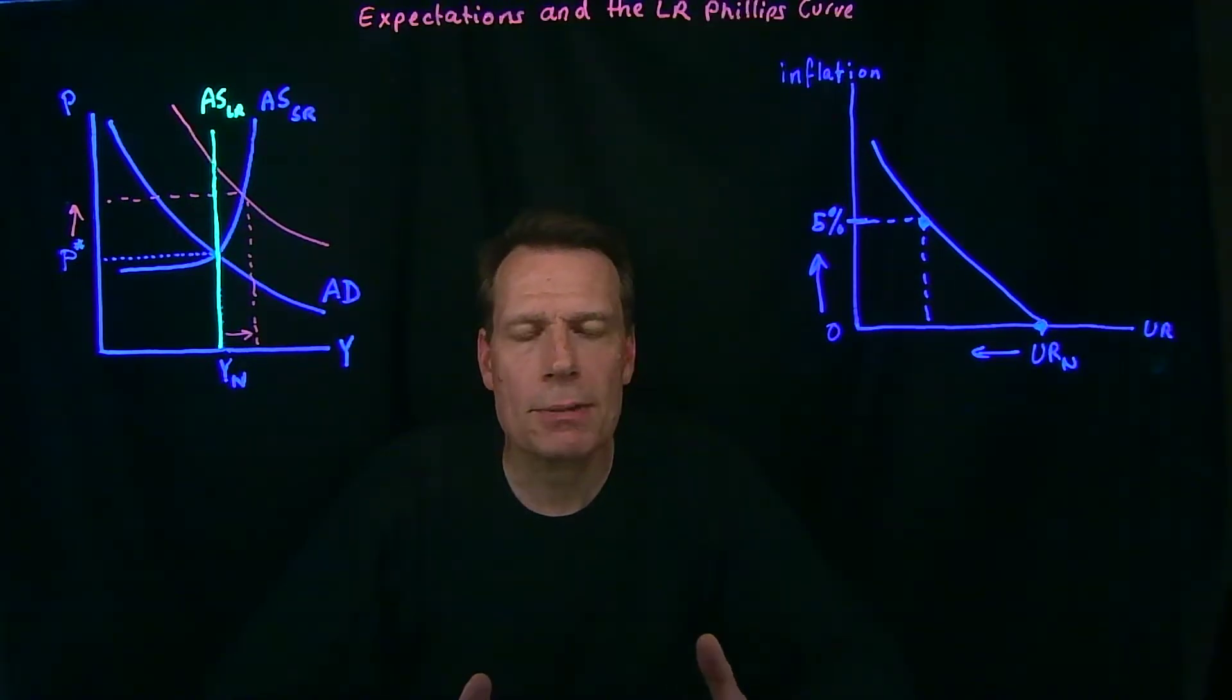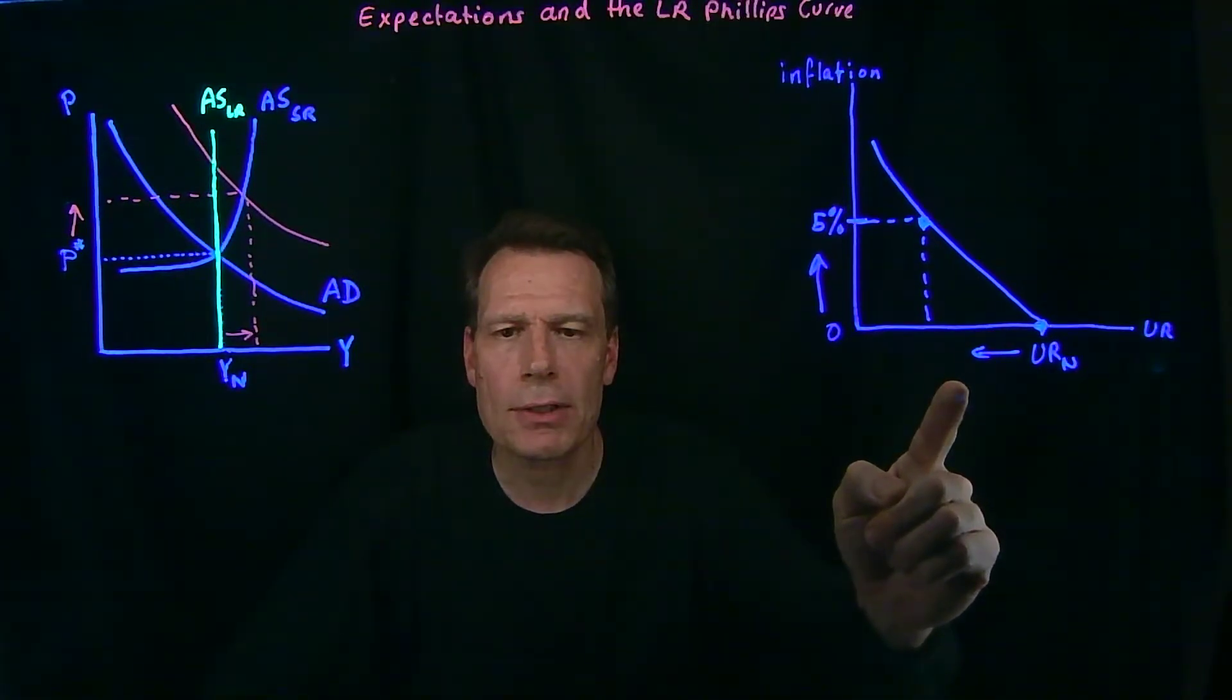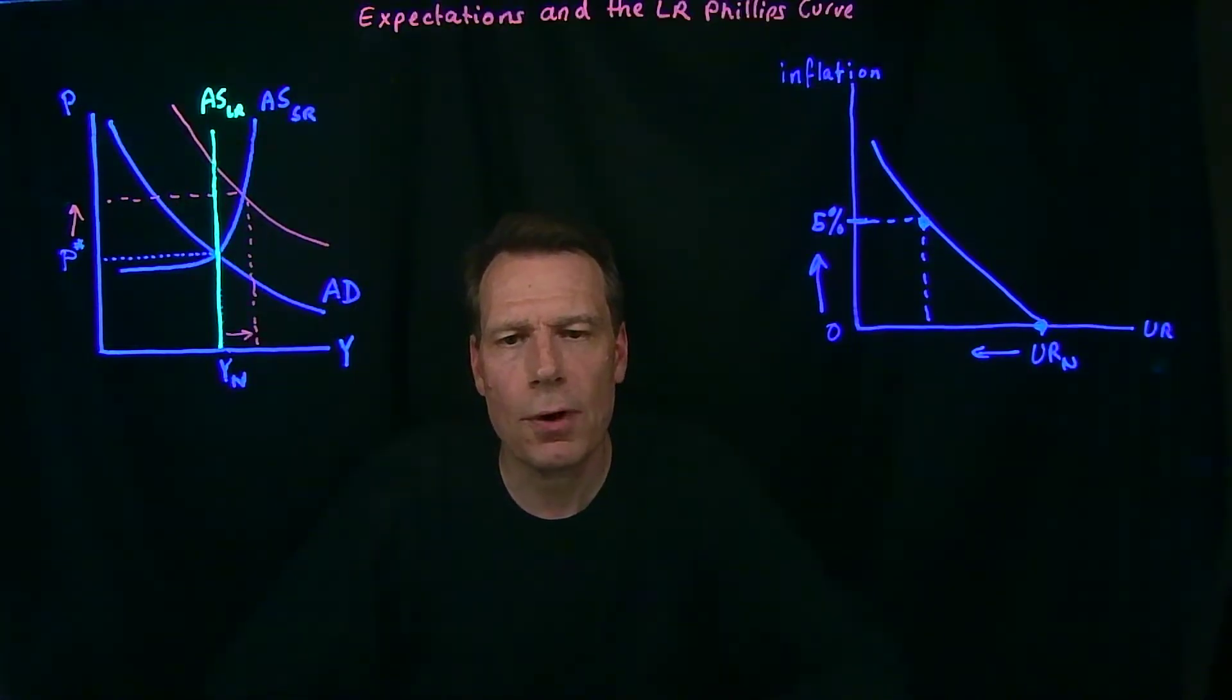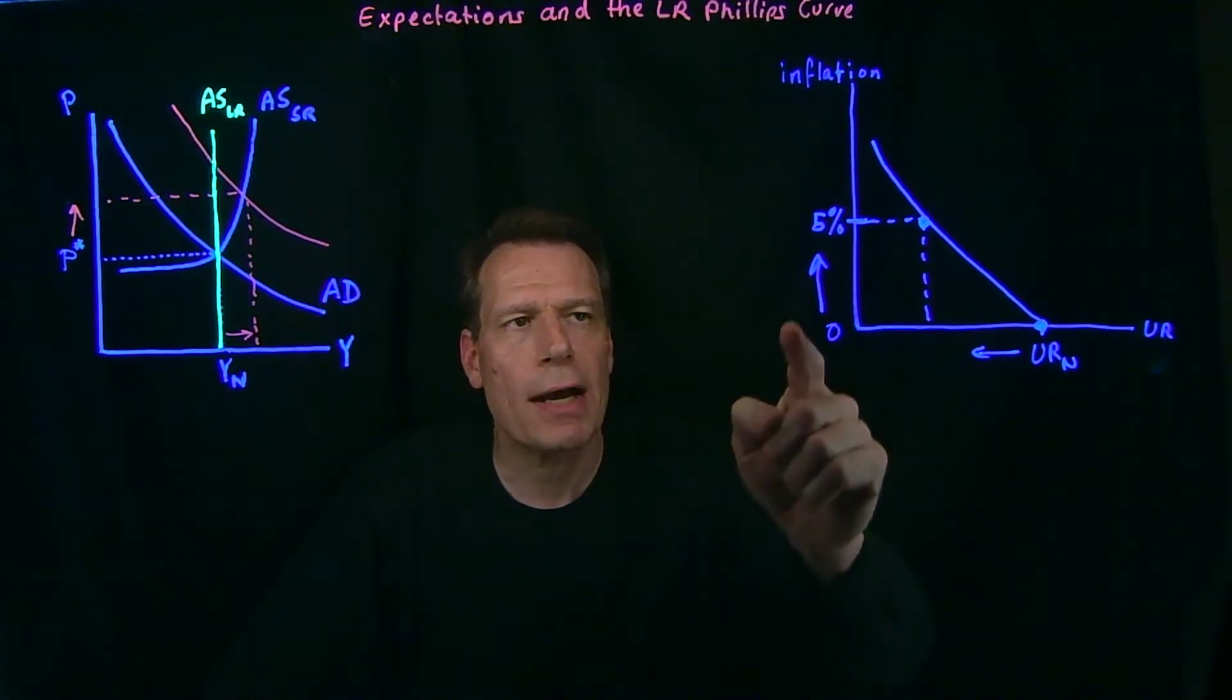At that point, everyone expects inflation to be 0% because that's what it is. Then the government engages in expansionary policy that causes the unemployment rate to fall, but at the cost of higher inflation.